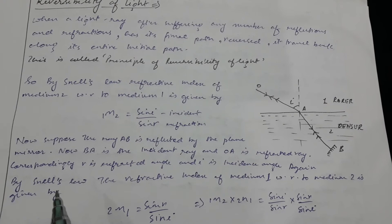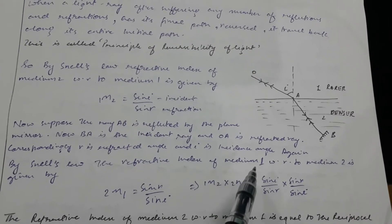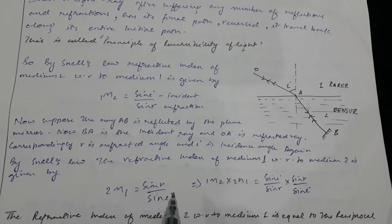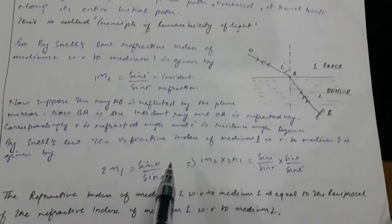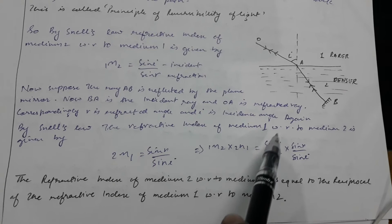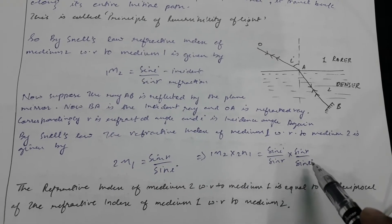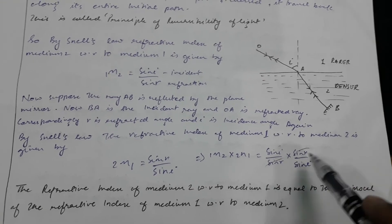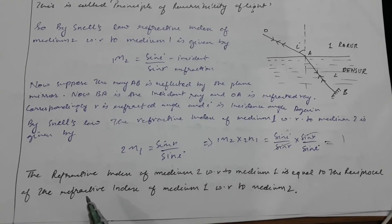By Snell's law, the refractive index of medium 1 with respect to medium 2 is given by sine r by sine i, which equals the above expression. This will cancel sine i by sine i and sine r by sine r, which equals 1.